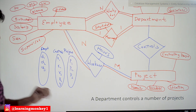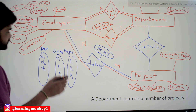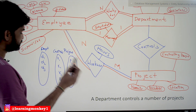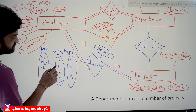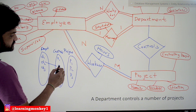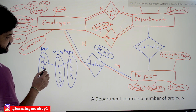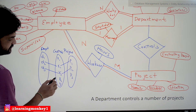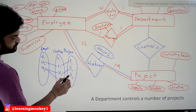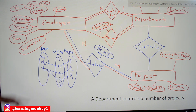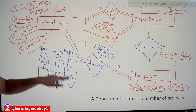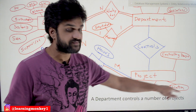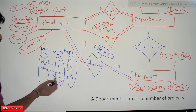For example, department 1 is not controlling any projects. Department 2 is controlling project P1, and department 3 is controlling both project P2 and project P3. Department 3 can control both projects because the requirements state that a department controls a number of projects.